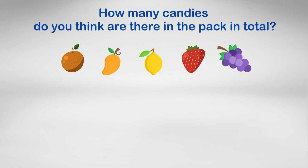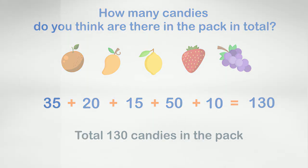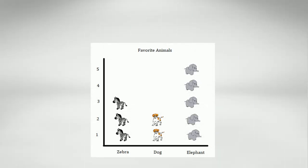Let's add all flavors to get the total number. 35 plus 20 plus 15 plus 50 plus 10 is equal to 130. Therefore there are total 130 candies in the bag. We hope now you have learned about picture graph.